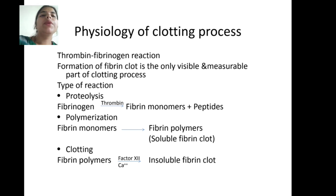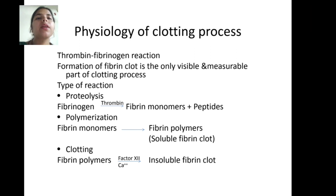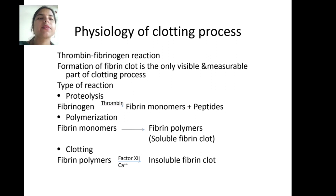There is the thrombin-fibrinogen reaction. Formation of fibrin clot is the only visible and measurable part of the clotting process. The type of reaction involved is proteolysis: fibrinogen plus thrombin yields fibrin monomers plus peptides.